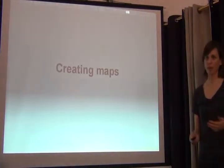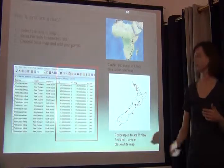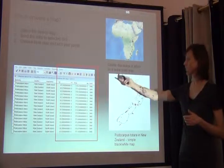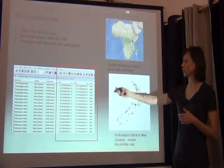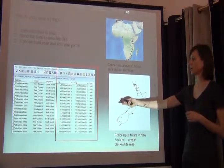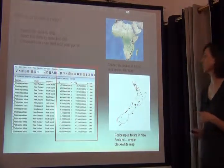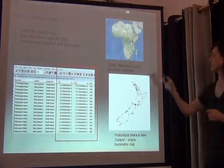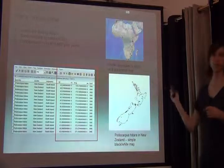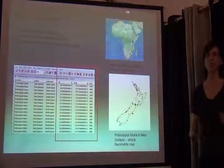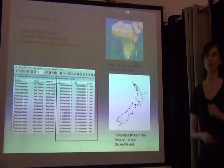You can also do mapping out of Brahms. It tracks your locality information and coordinates, and from there you can export that data to any sort of mapping system you may be using.